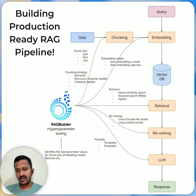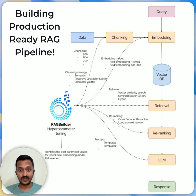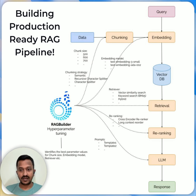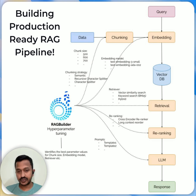What should be the chunk size? What is the optimal embedding model to use for my RAG pipeline? Today I'm going to show you how you can evaluate and see for yourself what's the most optimal RAG configuration or setup for your use case.